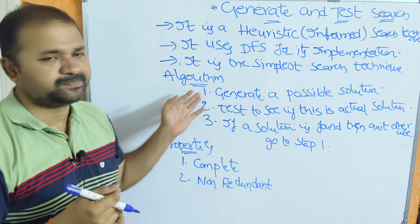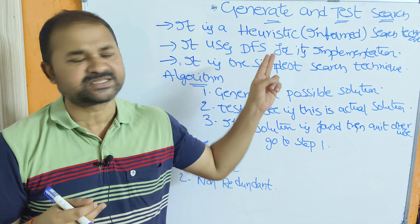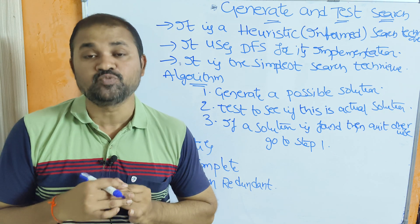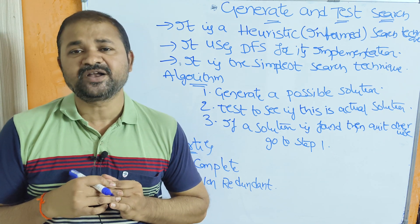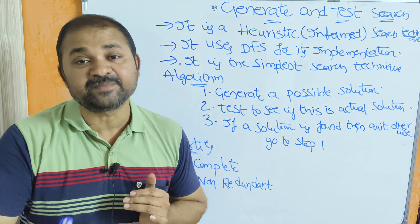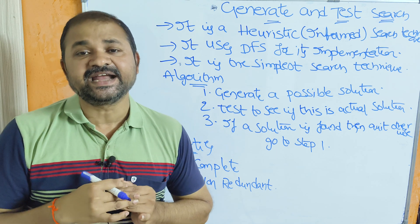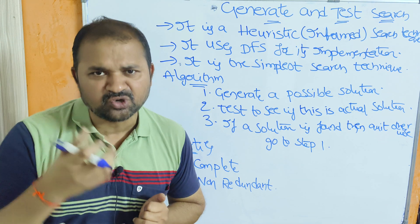Now, let us see the algorithm. Here we use two modules. The first module is the generator module. The generator module generates the possible solutions.